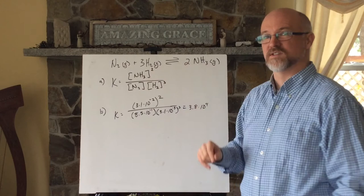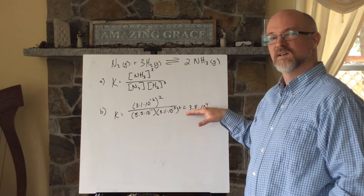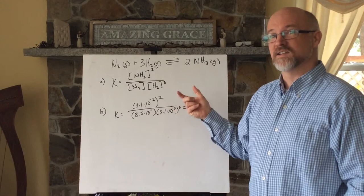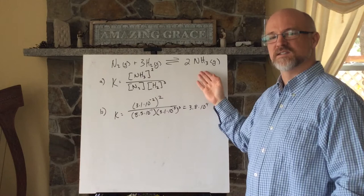Plug the numbers in, do the math, and the equilibrium constant is 3.8 times 10 to the 4th. Notice that there are no units. This is a proportionality constant that tells us that this equilibrium lies to the right. This is a product-favored reaction at this temperature.